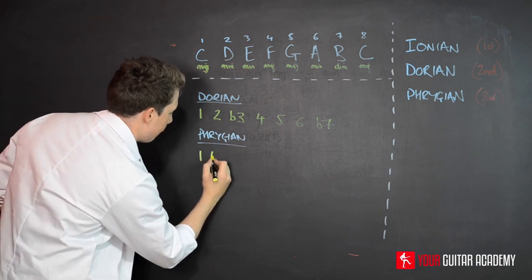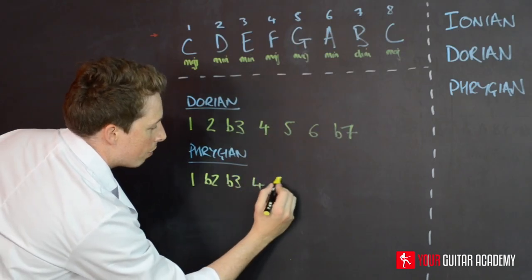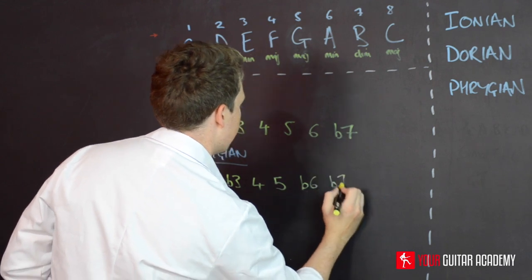It's 1, flat 2, flat 3, 4, 5, then flat 6, and flat 7.